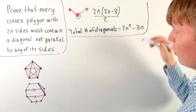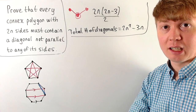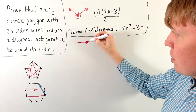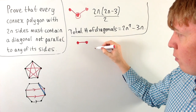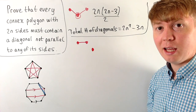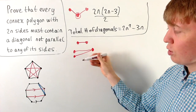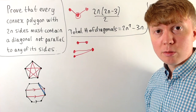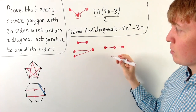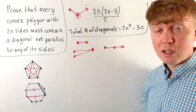Now we want to show that the total number of diagonals which can be parallel to any of the sides is less than 2n² minus 3n. Thinking from the point of view of one edge, any vertex not on that edge can only form at most one diagonal parallel to that side — because if we were to include another vertex, it would go in a different direction and wouldn't be parallel. This is where we need our polygon to be convex: in a non-convex polygon, two diagonals could potentially go in the same direction, but convexity prevents this.